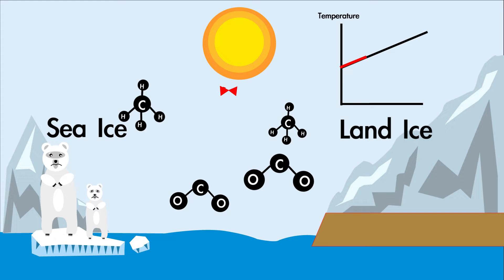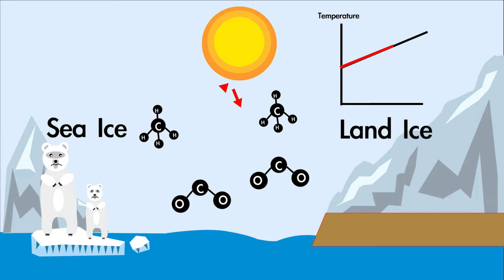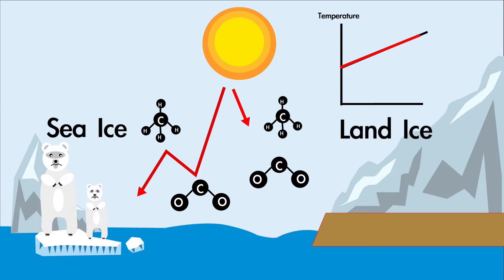Rising temperatures melt both land and sea ice in the Arctic. The melting of land ice contributes to sea level rise. Rising temperatures also cause thermal expansion of water, also resulting in sea level rise.